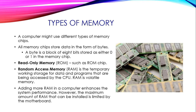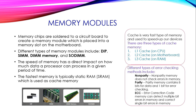RAM is volatile memory, meaning all data will be lost in case of a power cycle. Adding more RAM to a computer means faster performance; however, the maximum amount of RAM that can be installed is limited by the motherboard. Memory chips are attached to a circuit board to create a memory module, which is placed into a memory slot on the motherboard. Different types of memory modules include DIP, SIMM, DIMM, and SODIMM. For compatibility, the speed of the motherboard, RAM, and CPU must all be the same.